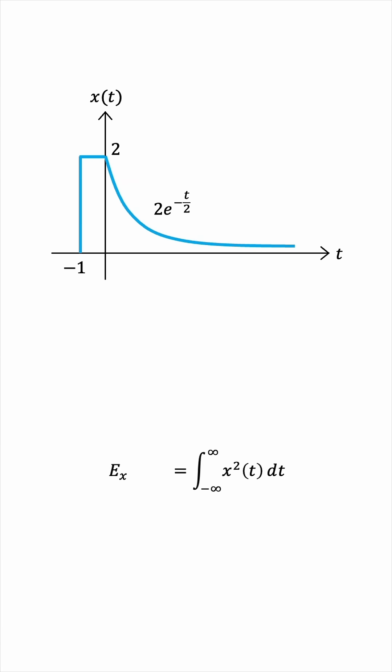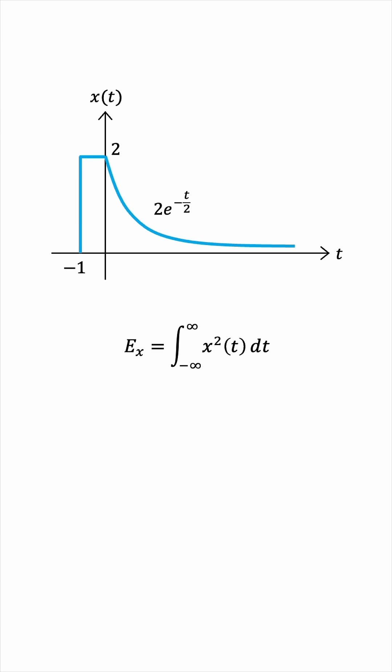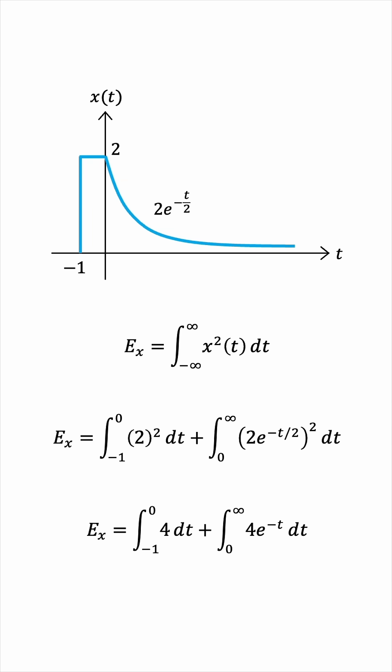The energy is equal to the integral from negative infinity to infinity of the square of the signal. Now, we see that we have two separate definitions — it's a piecewise defined function. From negative 1 to 0, it's defined as a constant value 2. But from 0 all the way to infinity, it's this decaying exponential, 2 times e to the negative t over 2. The first integrand squared is 4, and the second integrand squared is 4 e to the negative t.